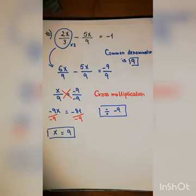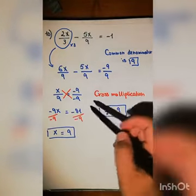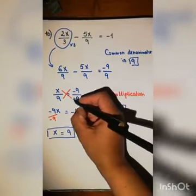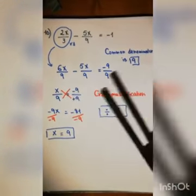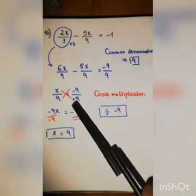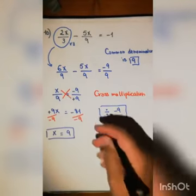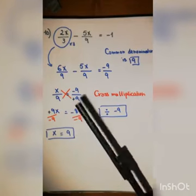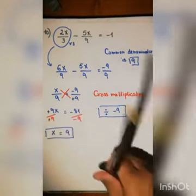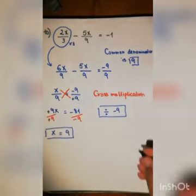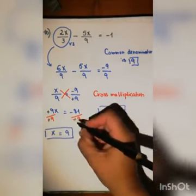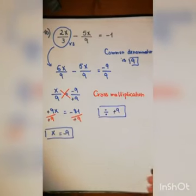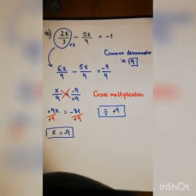Using cross multiplication: x times nine equals nine x, and nine times negative nine equals negative eighty-one. So nine x equals negative eighty-one. Dividing both sides by nine, x equals negative nine.